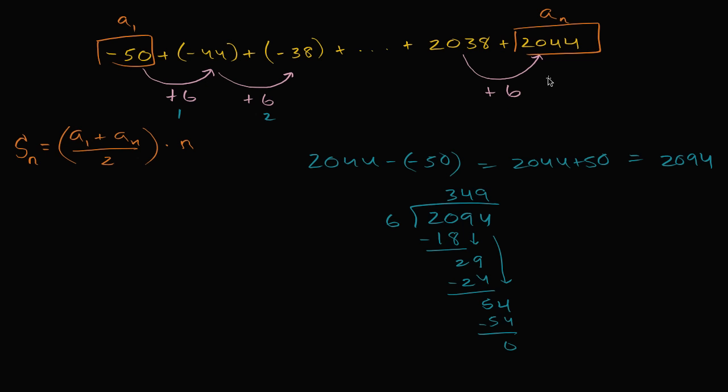So let me make it clear. This is the 349th time I added six to get to this, but we haven't counted the first term just yet. So we have the first term, and then we add six 349 times. So we have 350 terms in this sum. So in this case, n is going to be equal to 350.